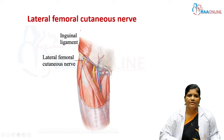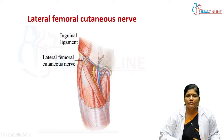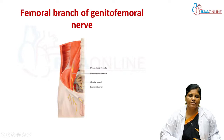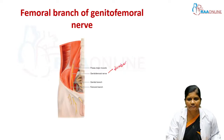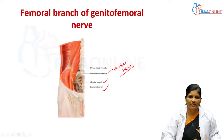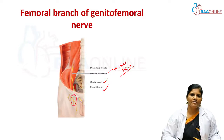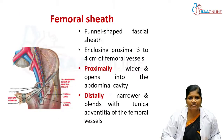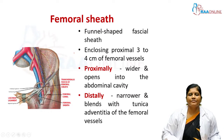The lateral femoral cutaneous nerve also emerges from the lumbar plexus, runs over the substance of psoas major, reaches the femoral triangle near the anterior superior iliac spine at its most lateral aspect, and supplies a strip of skin over the lateral aspect of the front of the thigh. The femoral branch of the genitofemoral nerve, also from the lumbar plexus, divides into genital and femoral branches; the femoral branch appears within the femoral triangle alongside the femoral artery.